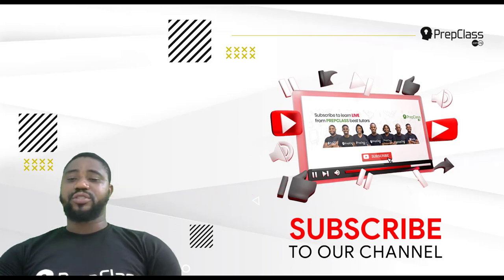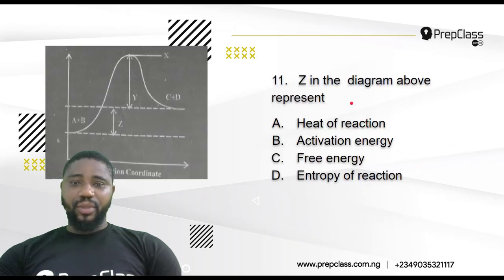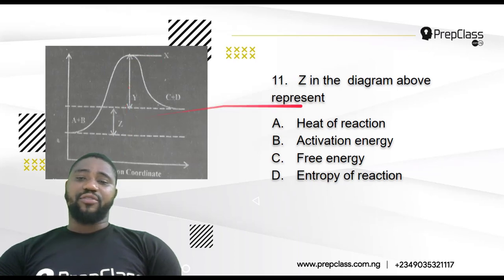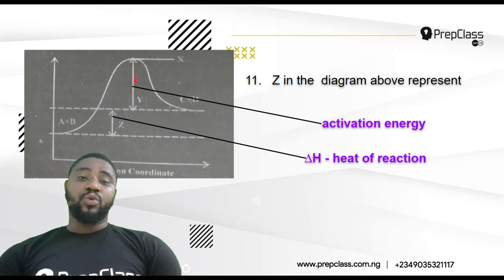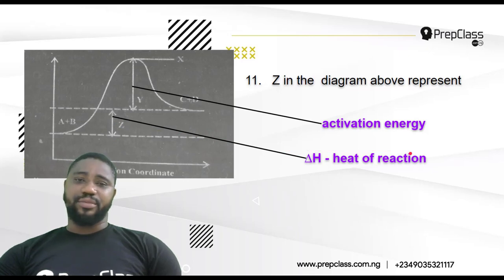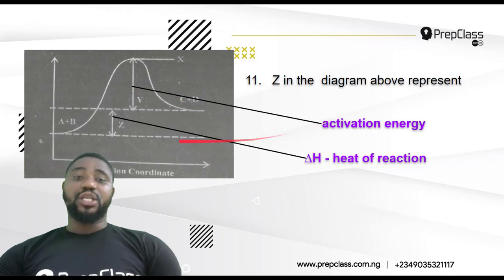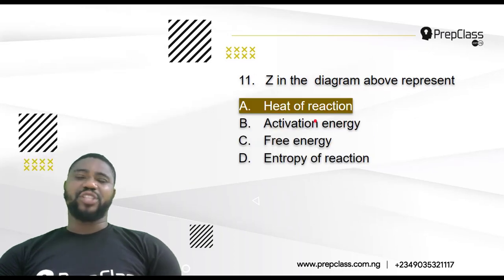Question number 11: Z in the diagram above represents what? Look at this diagram — you can see Z here, you can see Y, you can see X. Y represents the activation energy, and Z represents the heat of reaction. Very simple. This energy diagram represents an endothermic reaction. So Y is the activation energy and Z is the heat of reaction. The correct answer is heat of reaction.